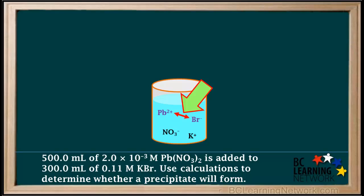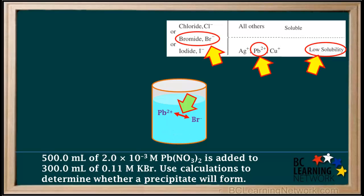Possible combinations of ions in the products could be Pb²⁺ and Br⁻, which could form PbBr₂, or K⁺ and NO₃⁻, which could form KNO₃. K⁺ and NO₃⁻ are both spectator ions, so KNO₃ will not be a precipitate; therefore, we can discard these ions. According to the solubility table, lead(II) bromide is classified as having low solubility, so it could form a precipitate if the concentrations of the Pb²⁺ and Br⁻ ions are high enough.